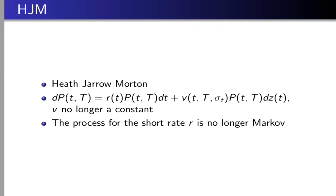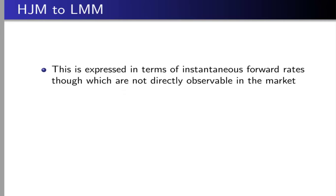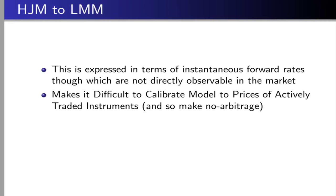But they also run into problems. This is expressed in terms of instantaneous forward rates, which are not directly observable in the market, and that makes it difficult to calibrate the model to prices of actively traded instruments. And so to make no arbitrage, if your prices are fixed by actively traded things, there's no arbitrage possibility, since otherwise players in the market would take advantage of it.